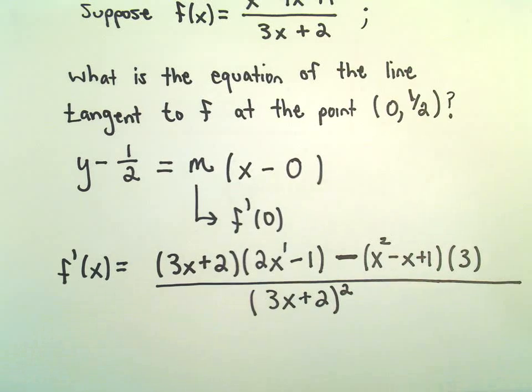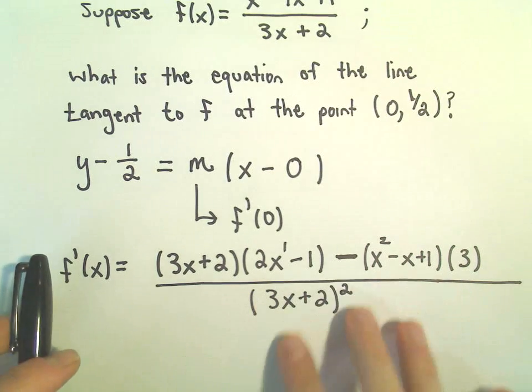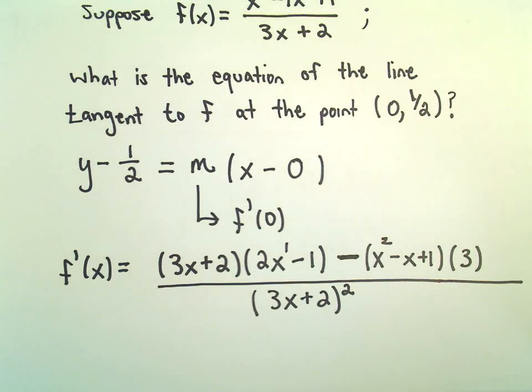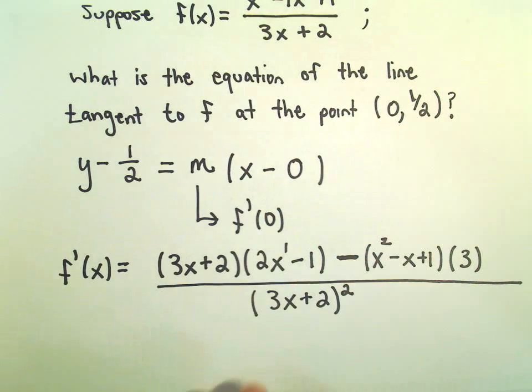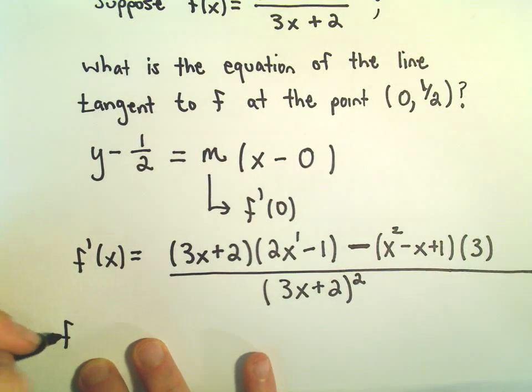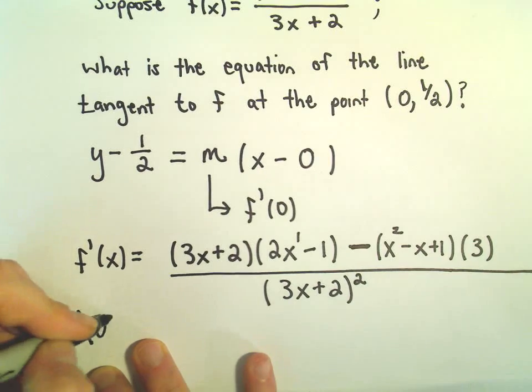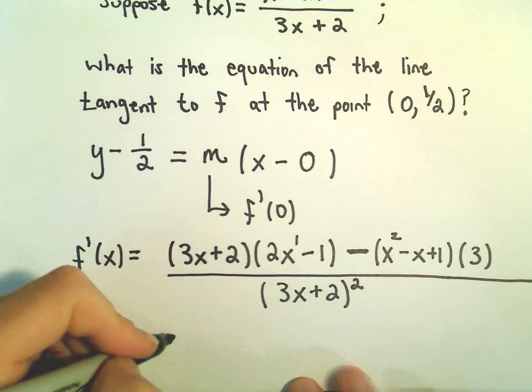Alright, so again, in one of the quotient rule problems, I kind of simplified all this. But to me, all we're trying to do is plug in x = 0. So you could simplify it, but in terms of getting the slope of the tangent line, we certainly don't need to do that here.